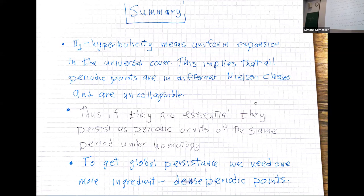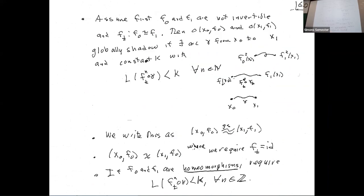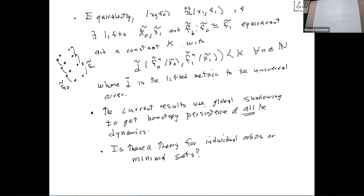We need an idea that generalizes Nielsen equivalence to non-periodic points. We pass to the universal cover. We have two homotopic maps, and we say that orbits globally shadow if they stay a bounded distance away in the covering space. That's global shadowing.